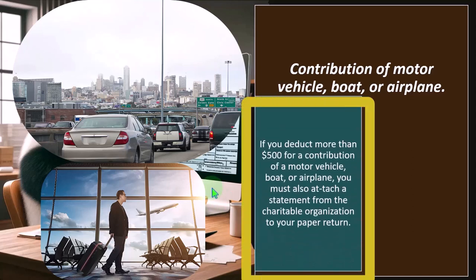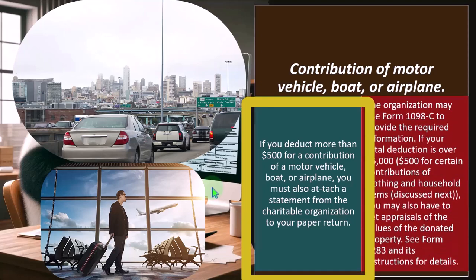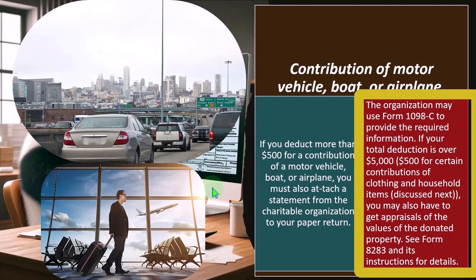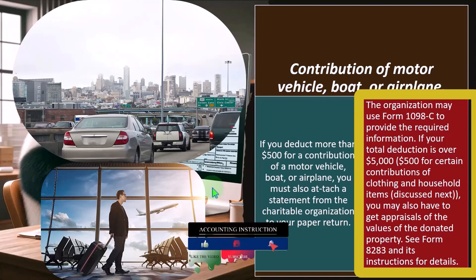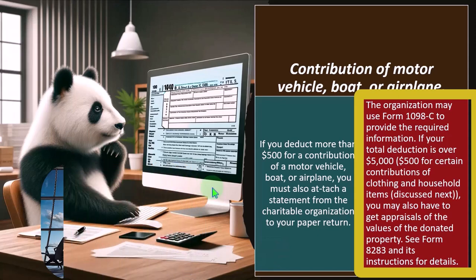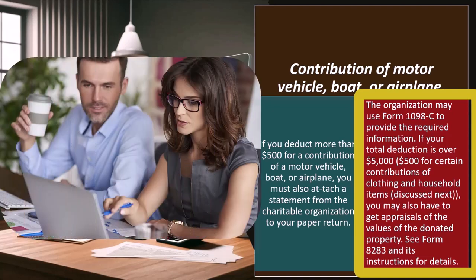If you deduct more than $500 for a contribution of a motor vehicle, boat, or airplane, you must also attach a statement from the charitable organization to your paper return. The organization must use Form 1098-C to provide the required information. If your total deduction is over $5,000 for certain contributions of clothing and household items, you may also have to get appraisals of the donated property's value. When you're looking at high dollar amount items, people might try to game the system — give a lemon of a car, then overvalue it to get a large deduction. So there are many scams set up from a tax preparation standpoint with regards to charitable contributions.